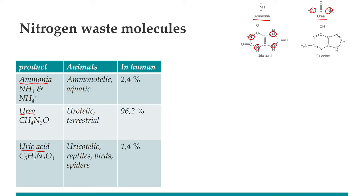Animals that mainly use ammonia are called ammonotelic, and they are all aquatic. Animals like humans that mostly produce urea are ureotelic and are terrestrial. Animals producing mainly uric acid or related molecules are uricotelic — like reptiles, birds, and interestingly, spiders, which use guanine. In human urine, 96% is urea, but there is still a small amount of ammonia and uric acid present.